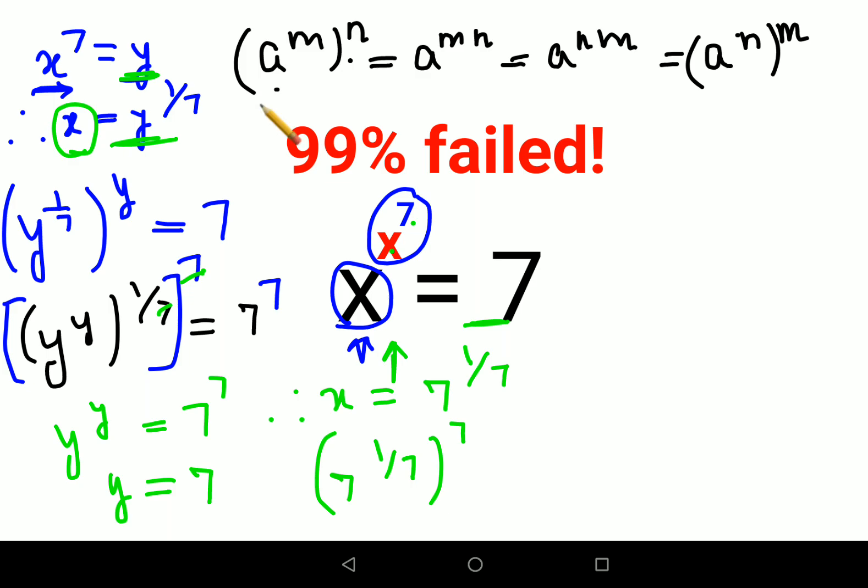Now we know that a raised to m, the whole raised to n can be written as a raised to m into n. So this can be written as 7 raised to 1 upon 7 into 7. So this and this will cancel. Therefore, I can say it is just coming down to 7 which is your RHS.